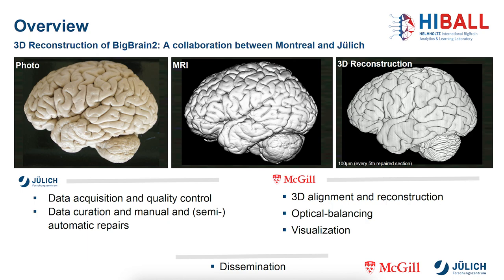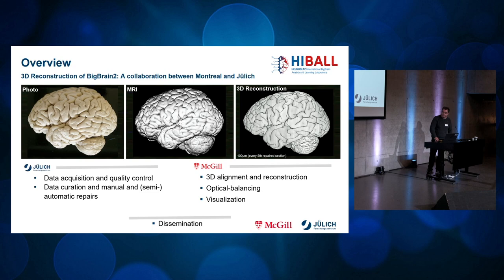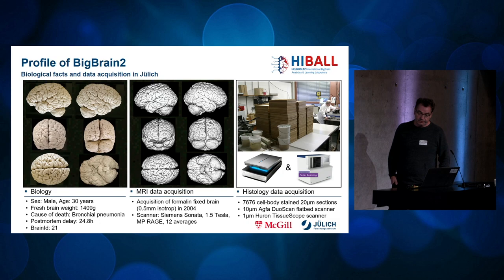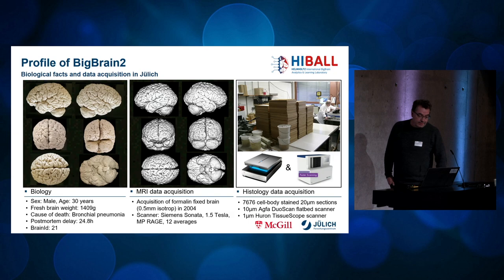BigBrain 2 is from a male who died of bronchial pneumonia in 1994 at the age of 30 years, which is pretty young for a postmortem brain. The postmortem time was about 25 hours and the formalin-fixed brain was scanned in Jülich in 2004 with a Siemens Sonata 1.5 Tesla MRI scan at a resolution of 0.5 mm. Preparation, sectioning, and histological processing took place in Düsseldorf at the Vogt Institute, resulting in a total of 7,676 cell-body stained coronal sections at 20-micron thickness.